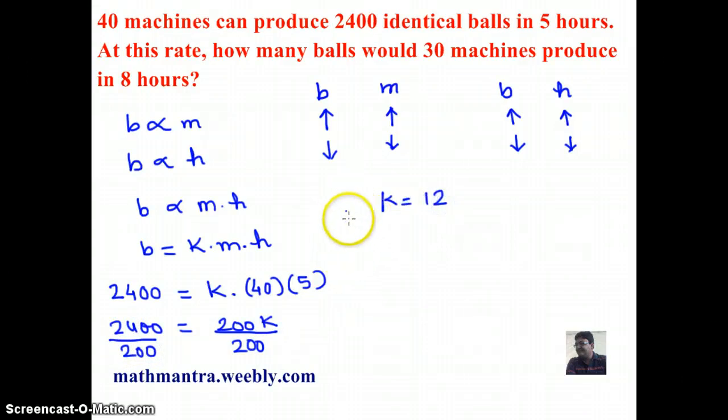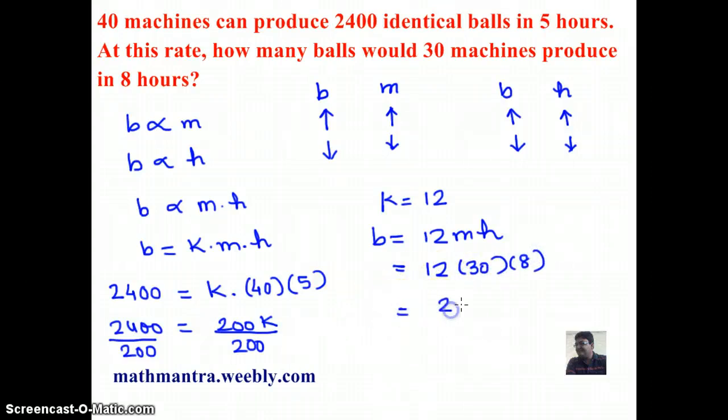Okay, so my equation is B equals 12 times M H. Now, I have been given 30 machines and 8 hours and I need to find B for that. So, 12 times 30 times 8, and that comes out to be 2880 balls.